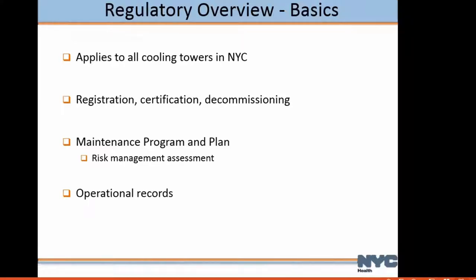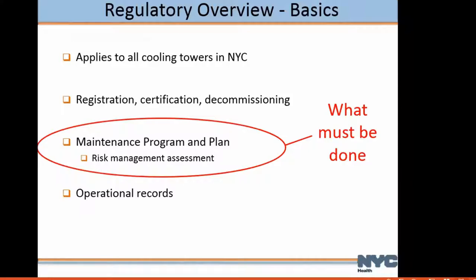The biggest requirement is the maintenance program and plan, which consists of a risk management assessment. All of those plans are based on identifying the risk and figuring out what to do. We require a maintenance program and plan in place for cooling tower systems — this is the building owner telling us what they're going to do to manage that engineered system.